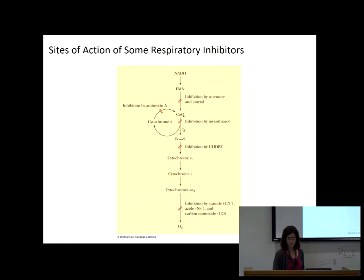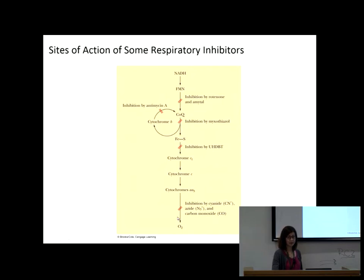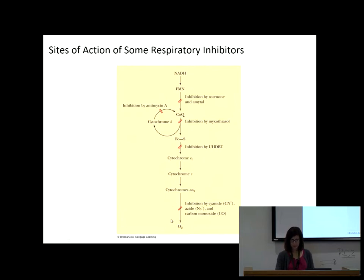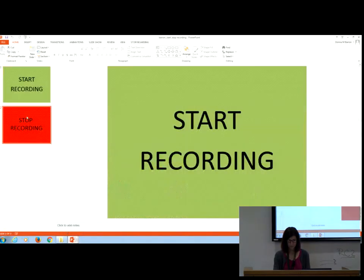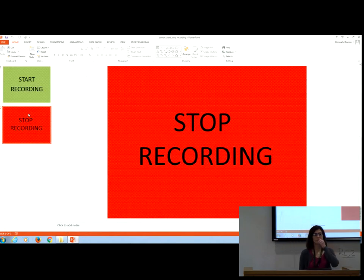At each one of those inhibition sites, the reactants are accumulating. What happens then is you're not going to pass electrons along to oxygen, you're not going to get the proton pumping, you're not going to make ATP, and you die. If you can't pass electrons along to oxygen, then you're dead.